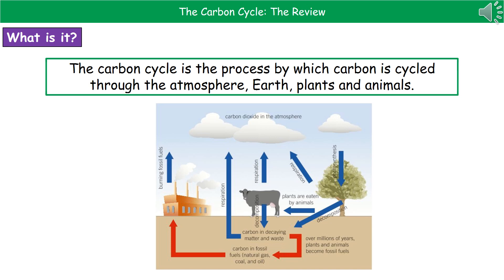From our animal, we can see decomposition again, but we also have an arrow going from both plant and animal back into the atmosphere, which is respiration, because all living things respire. That also shows us a third respiration arrow, which comes from our carbon in decaying matter and waste, because as those decomposers carry out their role, they are respiring and therefore releasing carbon dioxide back into the atmosphere.